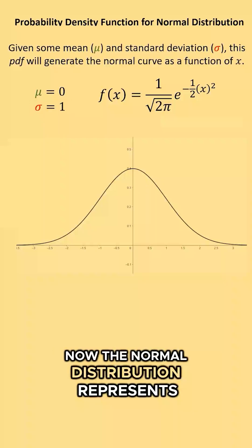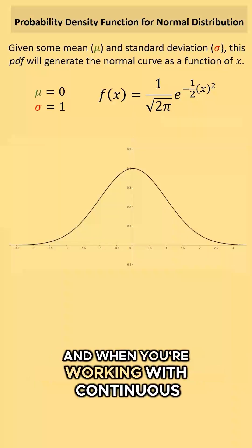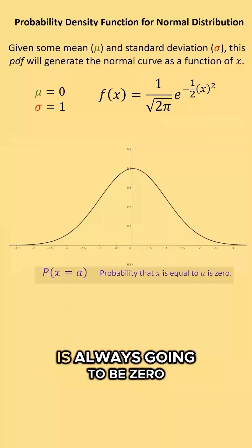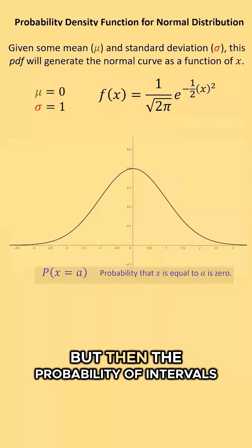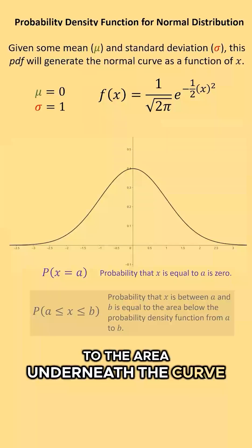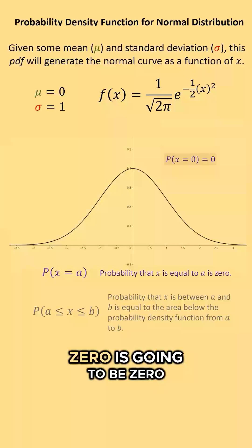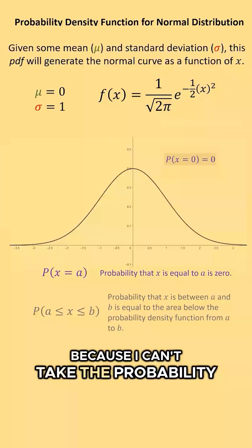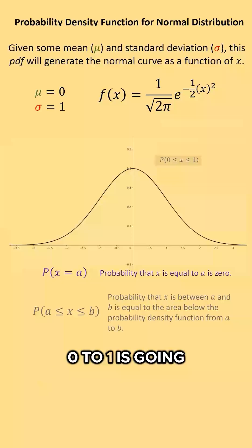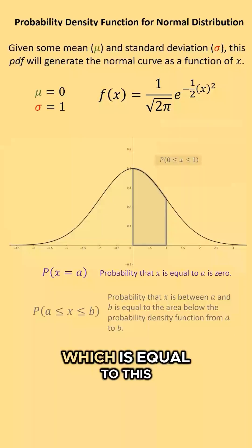The normal distribution represents a continuous probability density function. When working with continuous probability density functions, the probability at an individual point is always going to be zero. But the probability of an interval is equal to the area underneath the curve within that interval. For example, the probability of x being exactly zero is zero, but the probability from zero to one is represented by the area under this curve from zero to one.